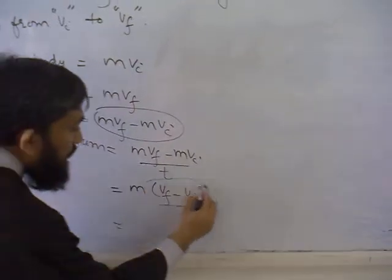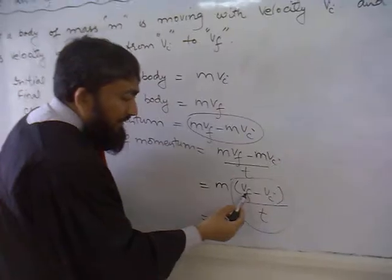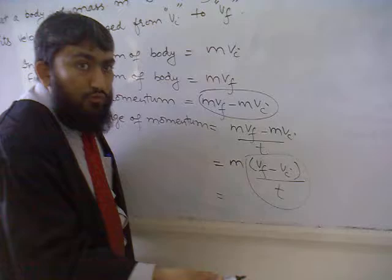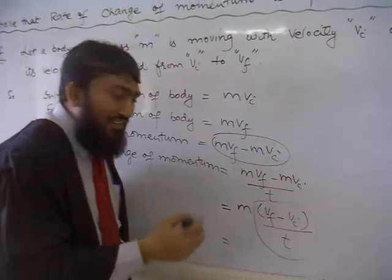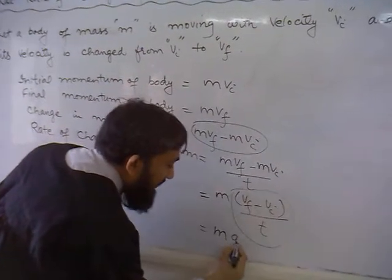And you know what do you call it - final velocity minus initial velocity divided by time. This is rate of change of velocity. And you know rate of change of velocity is called acceleration. So, that means m a.